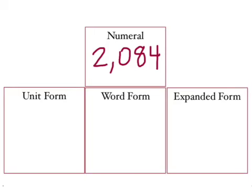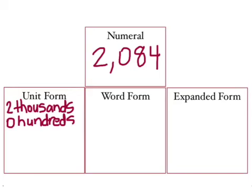For our last part, we'll have a different numeral, 2,084, and we'll do each of our forms. So for unit form, we want to make sure that we have our digit in its place. The digit is 2, and it's in the thousands place. That should be written in words. There are no hundreds, so it's zero hundreds. There are eight tens and four ones. So, a digit with its place.